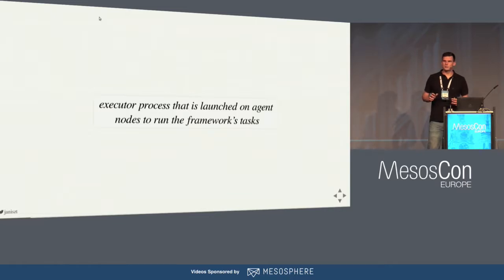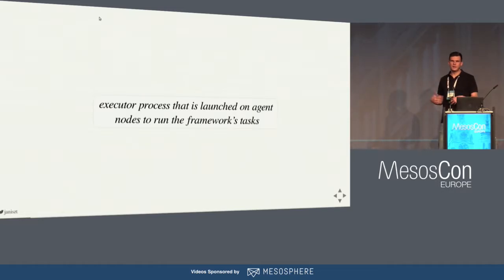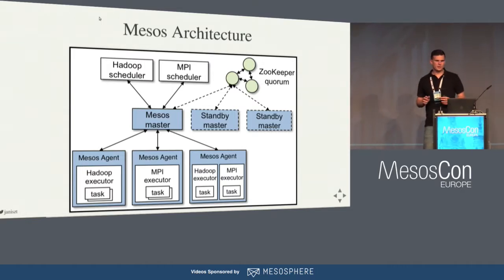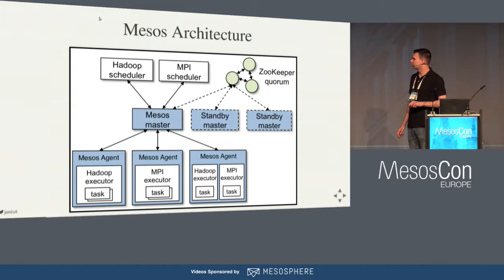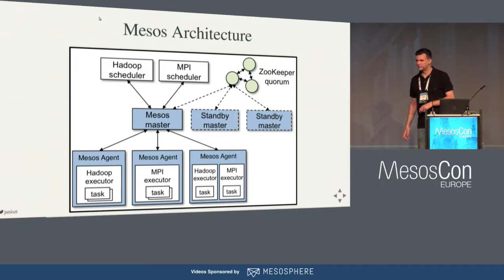Just a quick recap so we share the same understanding. An executor is a process that is launched on an agent in order to launch a task. It works for frameworks — it gets task info, or rather executor info, from protobuf and starts the task defined there. As shown in the Mesos architecture, custom executors for frameworks like Hadoop and MPI get information from frameworks passed via the master, work on slave agents, and start tasks. The executor is responsible for maintaining the whole task lifecycle.